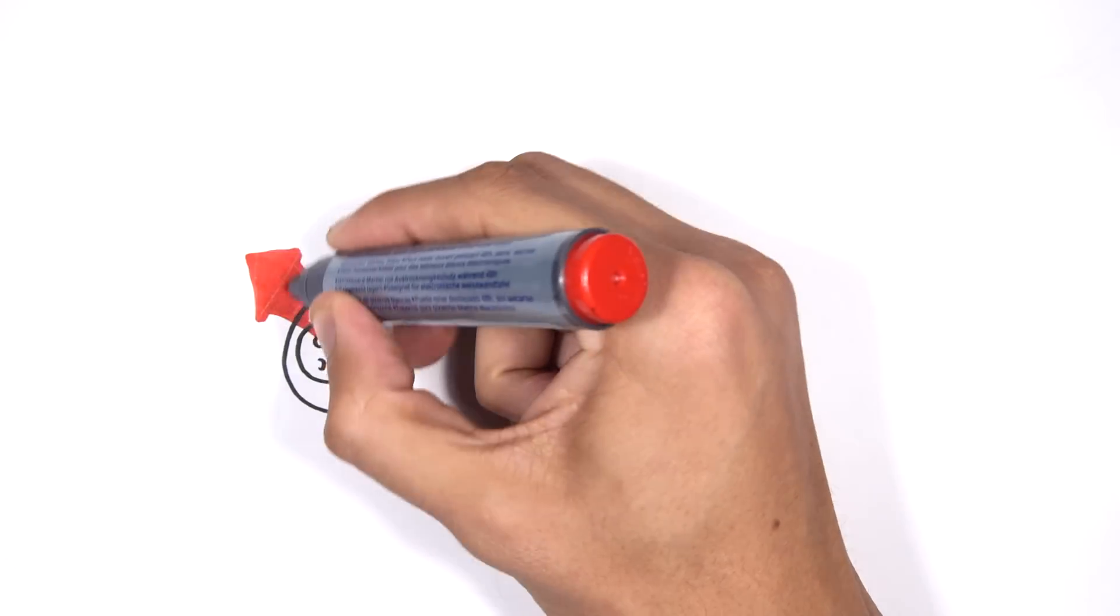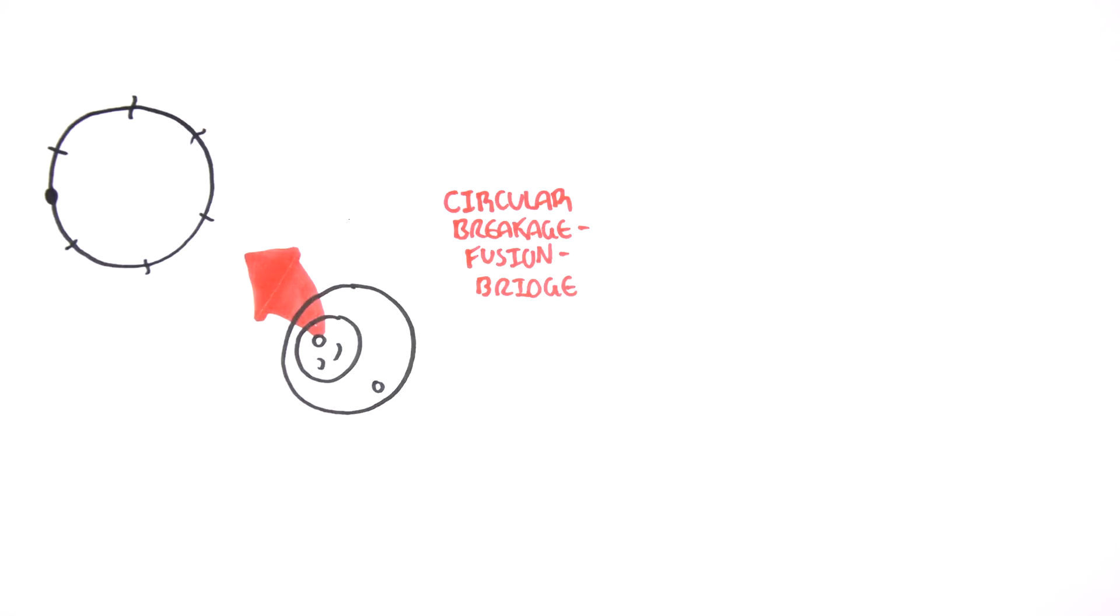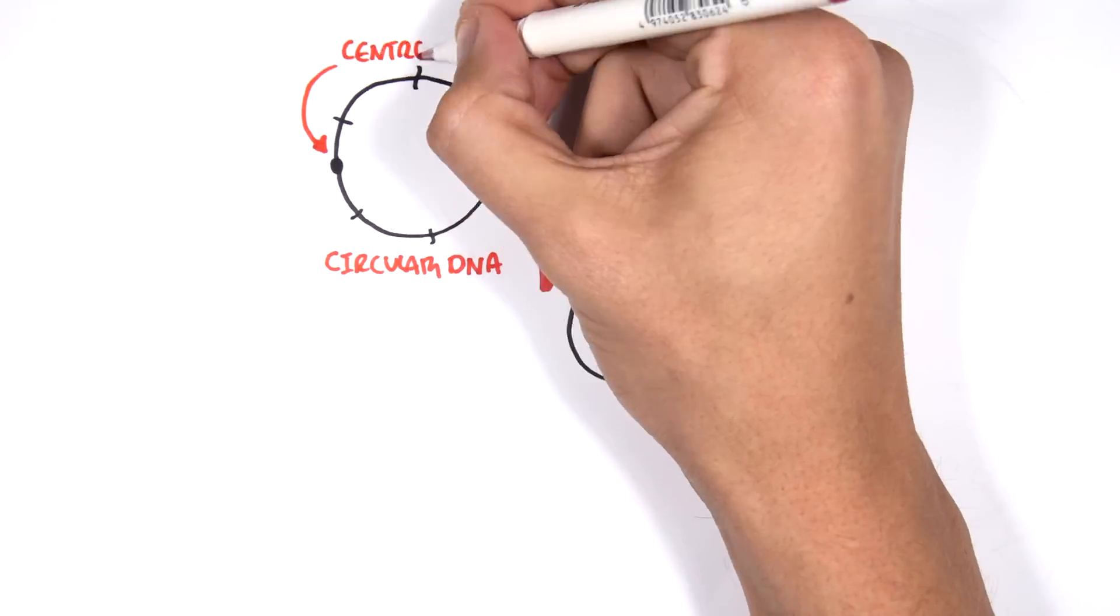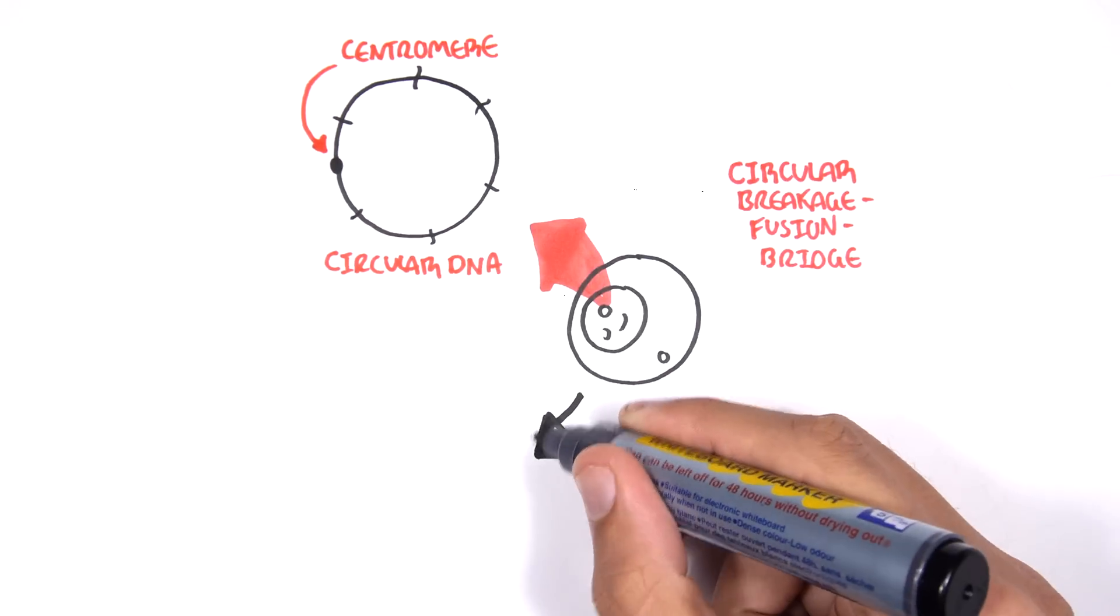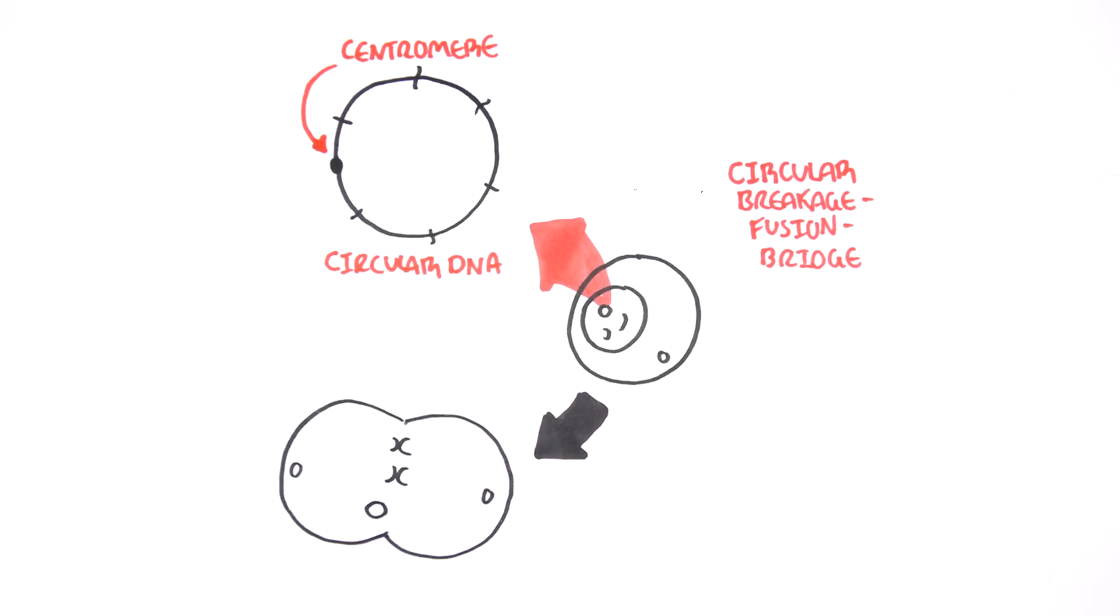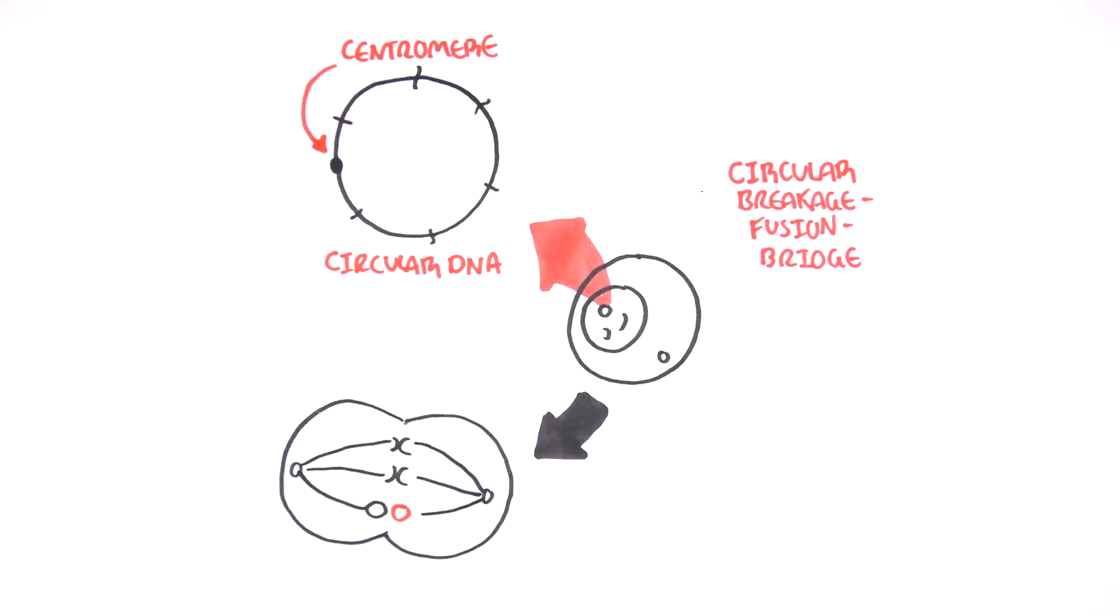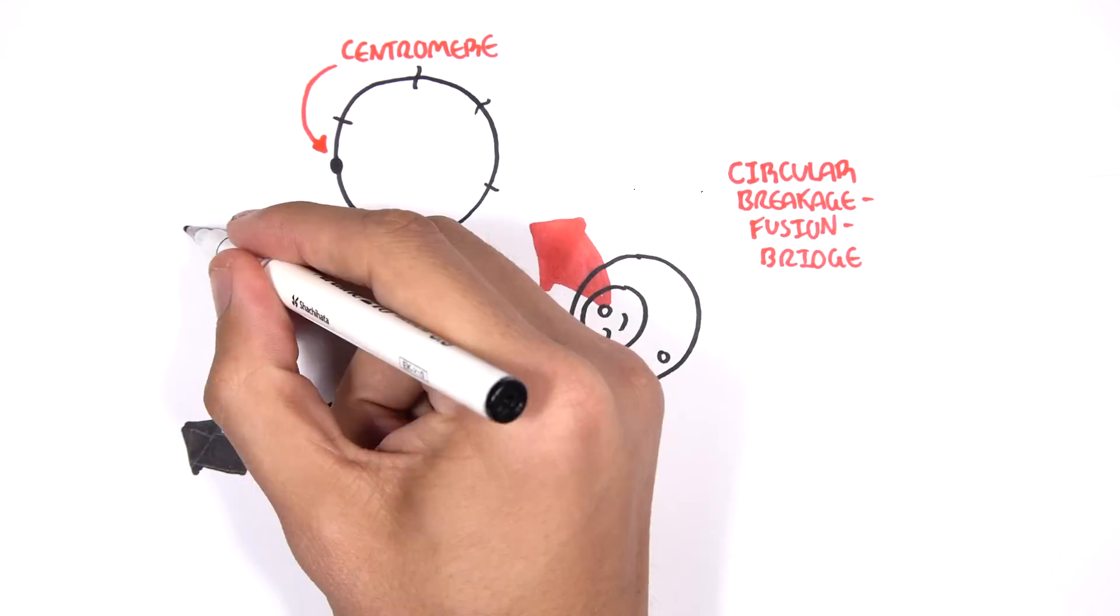Like normal chromosomes, circular chromosomes copy themselves before cells divide. Sometimes the copying goes smoothly, and at cell division, two identical circles migrate into daughter cells.